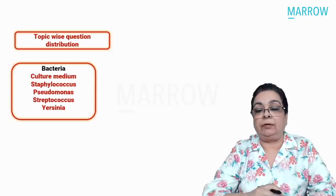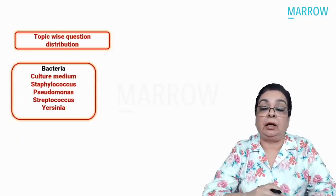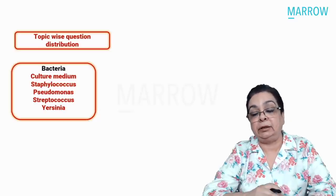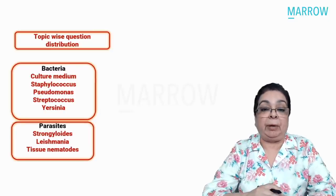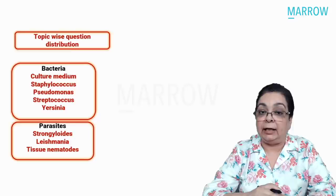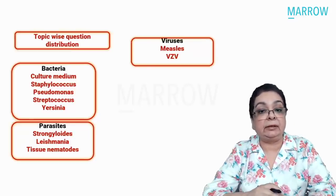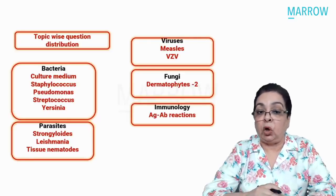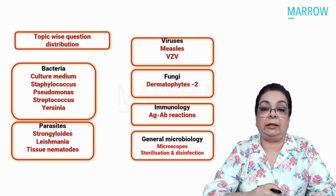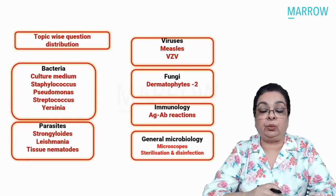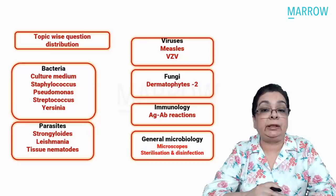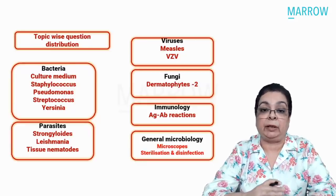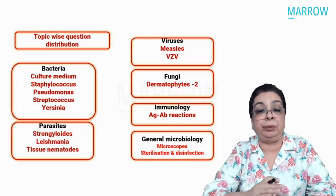Let's look at the distribution of questions. From bacteriology, we had five questions: culture mediums, staphylococcus, streptococcus, pseudomonas, and yersinia. From parasites: strongyloides, leishmania, and filarial nematodes. Among viruses: measles and varicella zoster. Among fungi: two questions on dermatophytes. In immunology: antigen-antibody reactions. In general microbiology: one question each on microscopes and sterilization and disinfection. Some of these questions overlap with other subjects and will be discussed by respective faculties in dermatology, PSM, or gynaecology.